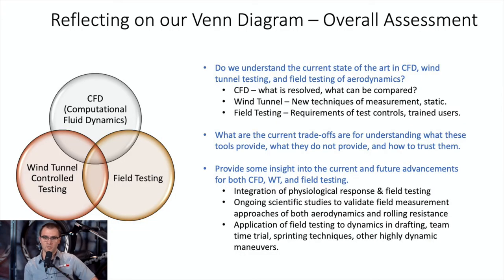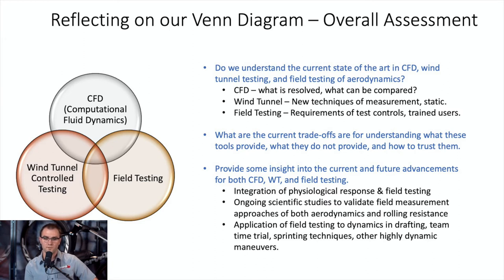Back to the Venn diagram to finish up: I've explained the current state of the art in CFD, wind tunnel testing, and field testing of aerodynamics — what things you can trust, what they're used for, what we can get out of them, and the current tradeoffs. Looking at future integration of testing, I believe there's a substantial amount of work to be done around integrating the physical and physiological response of a rider into a field test environment and how that plays a role in aerodynamics.